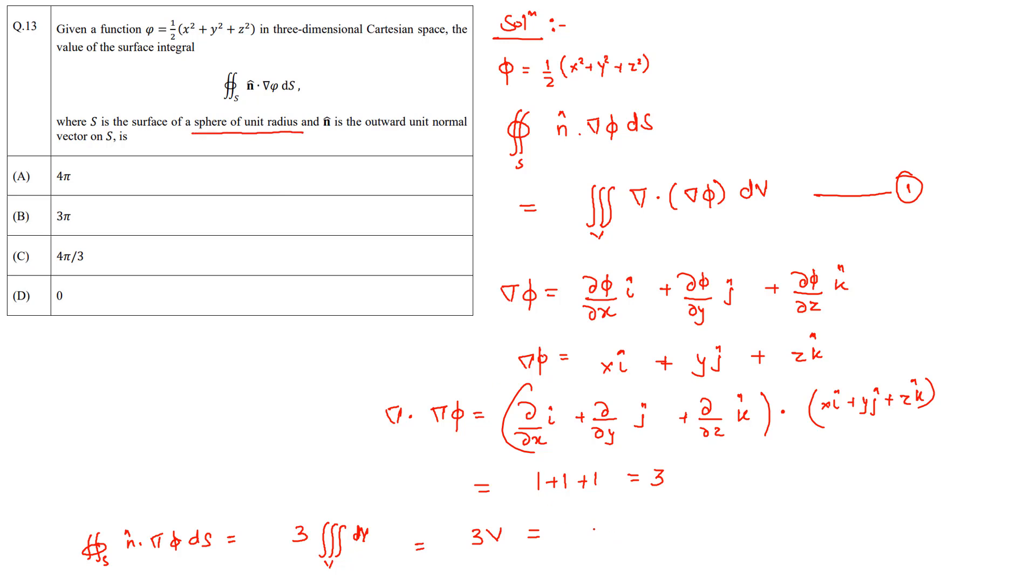And the volume will be, since this is a sphere of unit radius, the volume will be equal to 3 times 4/3 π r³, where r is 1, so 1³. The 3 and 3 get cancelled, then the final answer to this problem will be 4π, which is option A.